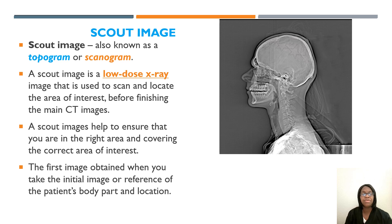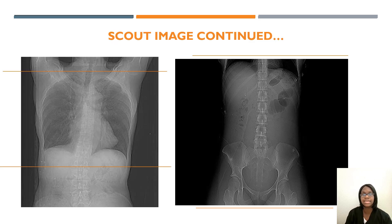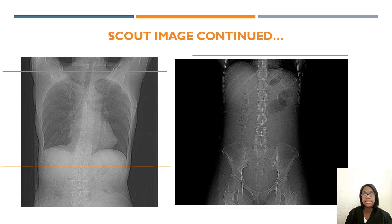For the scout image — also known as a topogram or scanogram — this is a low-dose x-ray image used to scan and locate the area of interest before acquiring the main CT images. It helps ensure you are in the right area before starting, whether scanning a head or chest. This is the first initial image you take to confirm the right body part, anatomy, and field of view. For a chest, you want to make sure you are getting the adrenal glands in, as they sit right above the kidneys and are a common site of metastasis.